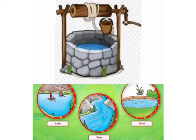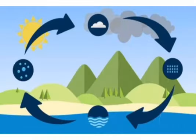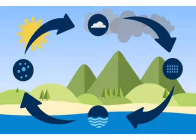We can use water from rivers, ponds, lakes, and wells. Children, have you ever thought about how we get rain? Let us learn about the water cycle. The Sun heats the water in ponds, rivers, and lakes, and this water changes into water vapor.